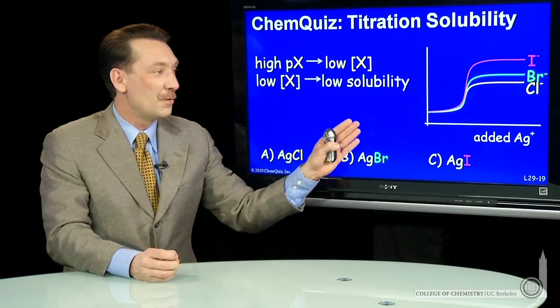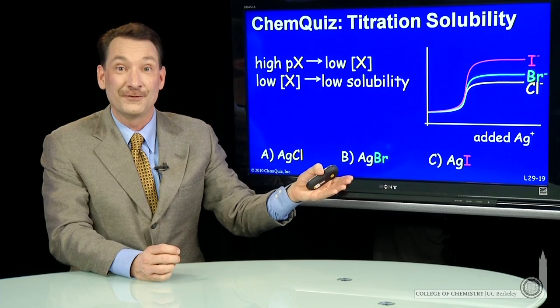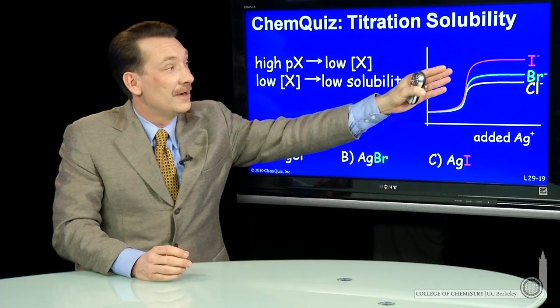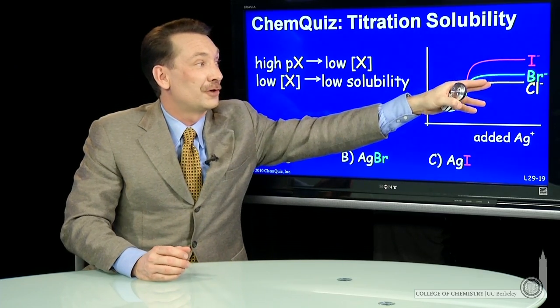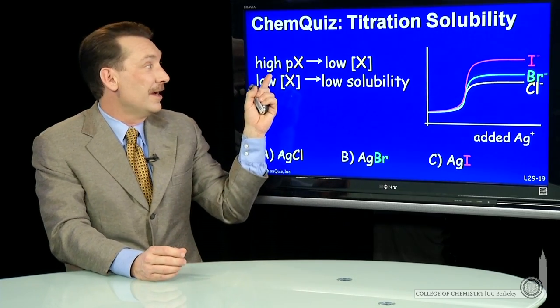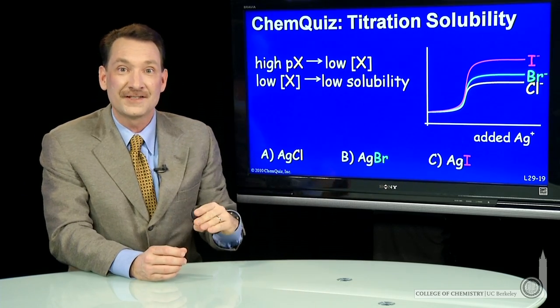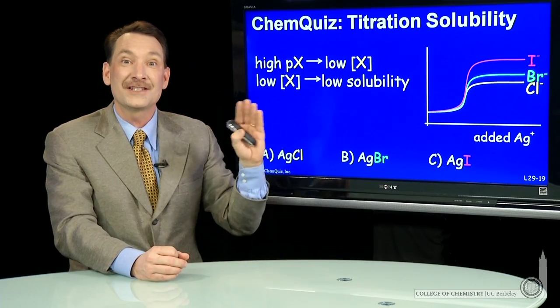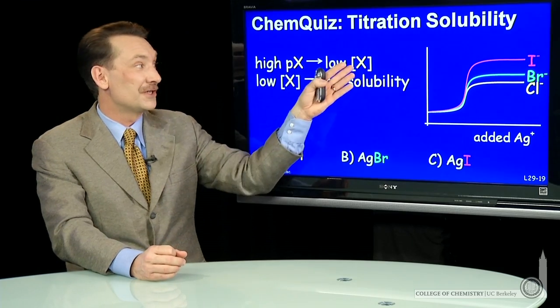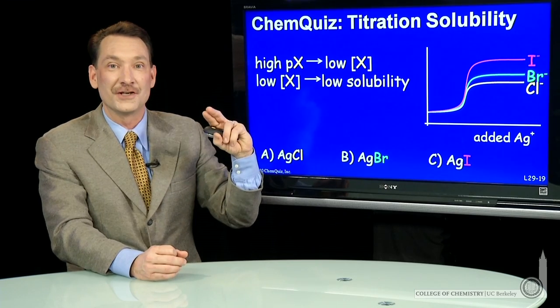The question is, when you've added a lot of silver, essentially excess silver, what are these concentrations of chlorine, bromine, or iodine? Well, the higher the pX, the lower the X concentration. Remember, it's minus log of the concentration that gives you the pX, so minus log of X concentration.